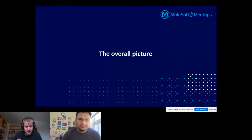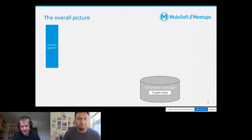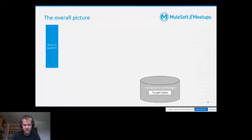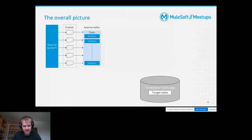Now let's switch to the overall picture. It starts with two components: the first is a source system which is supposed to deliver its data to a target system implemented via Teradata Vantage. For simplicity, we assume that data is intended to be imported into one single target table. The middleware is Apache Kafka, where the source system can publish its data to the topics.